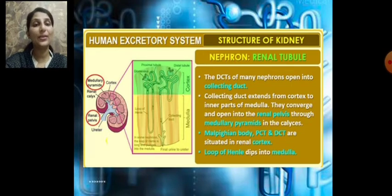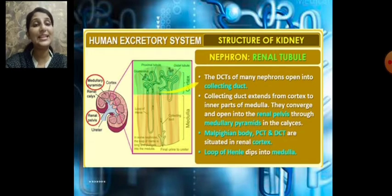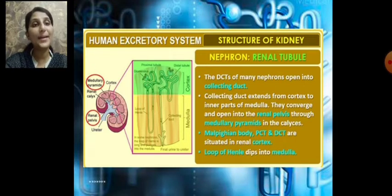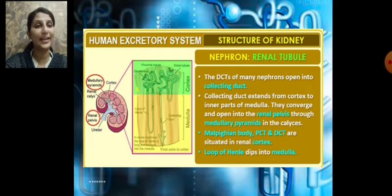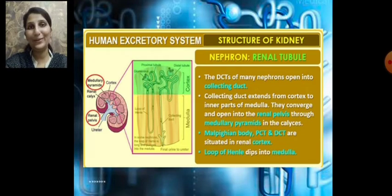The PCT, DCT, and the Malpighian body — that is, the glomerulus plus Bowman's capsule — are embedded in the cortical region, the renal cortex. The loop of Henle also dips down into the medulla.